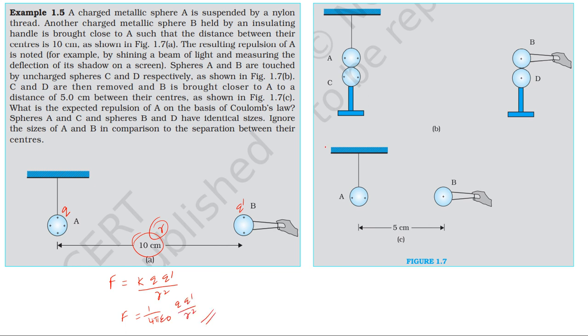If the spheres touch, if identical spheres touch, then equal charge is distributed. So sphere A is q by 2, sphere C is q by 2 charge.